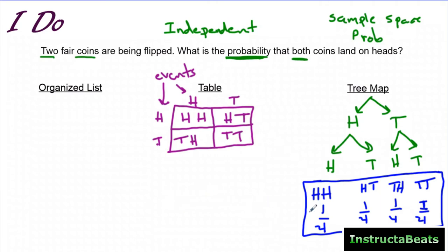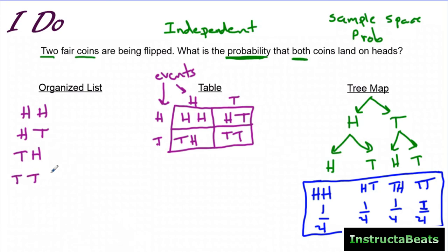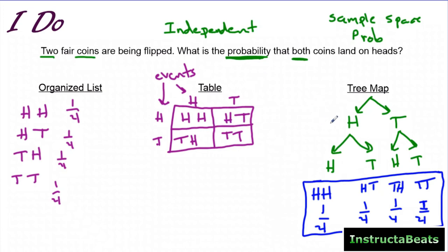The organized list is actually the least organized of the three methods. You write: heads-heads, heads-tails, tails-heads, tails-tails. It's my least favorite because you have to do more thinking as you write them down — whereas setting up a table or tree diagram and following the procedure makes it a little easier. But all three give you the same answer. If an organized list feels good to you, go ahead and use it.